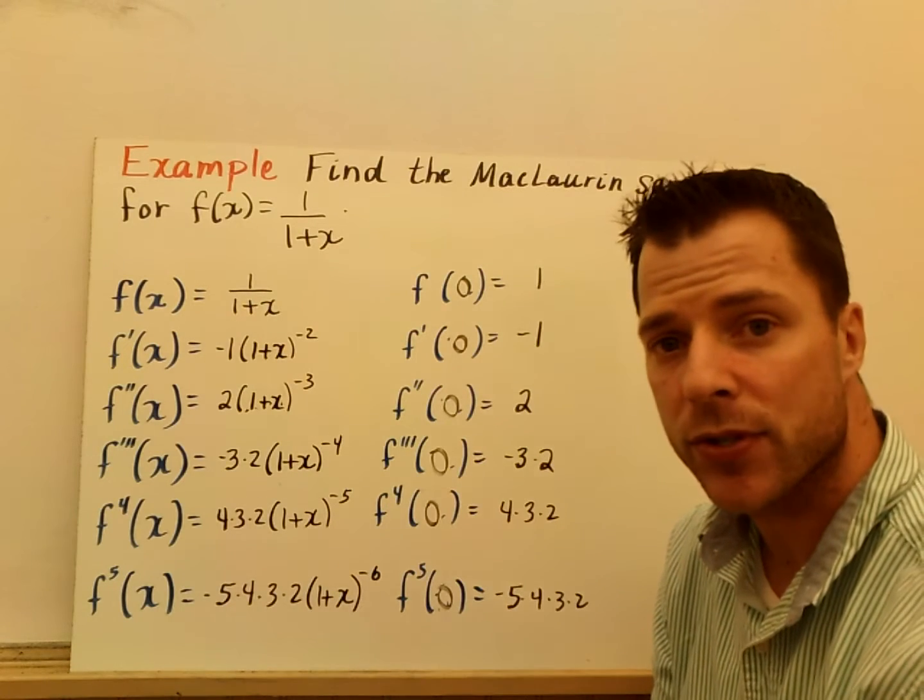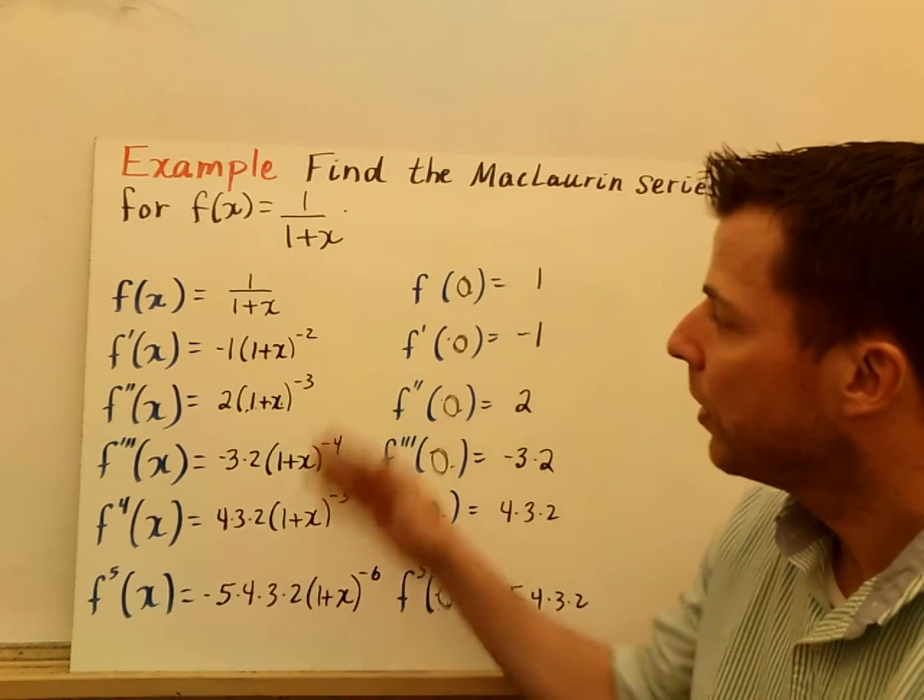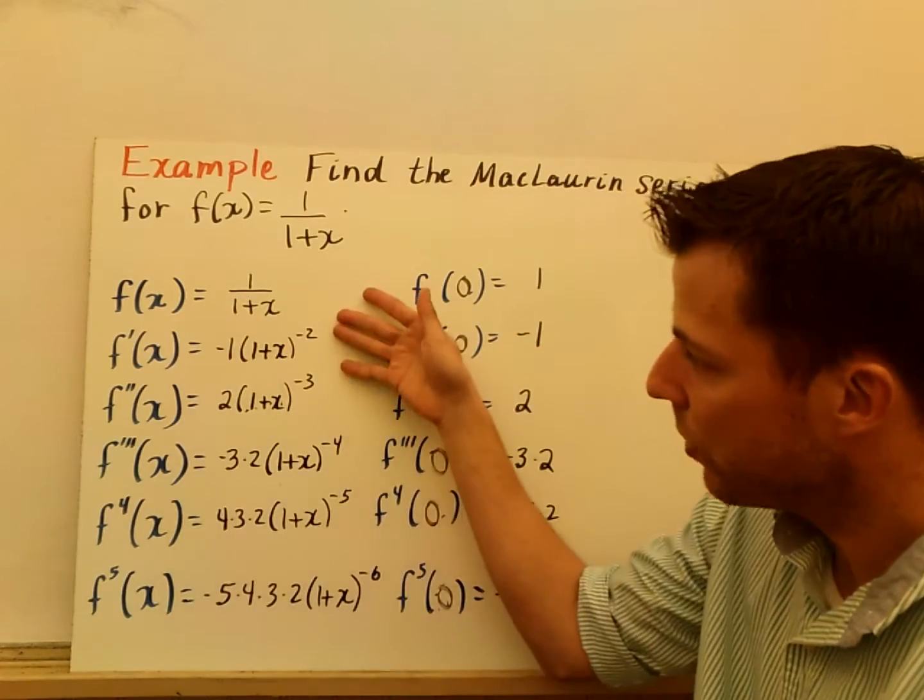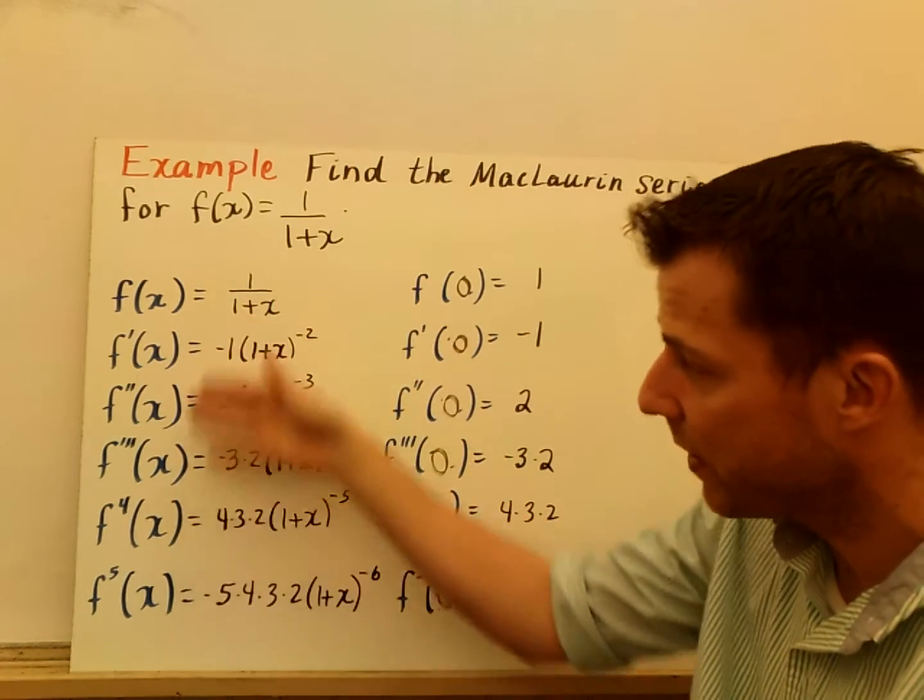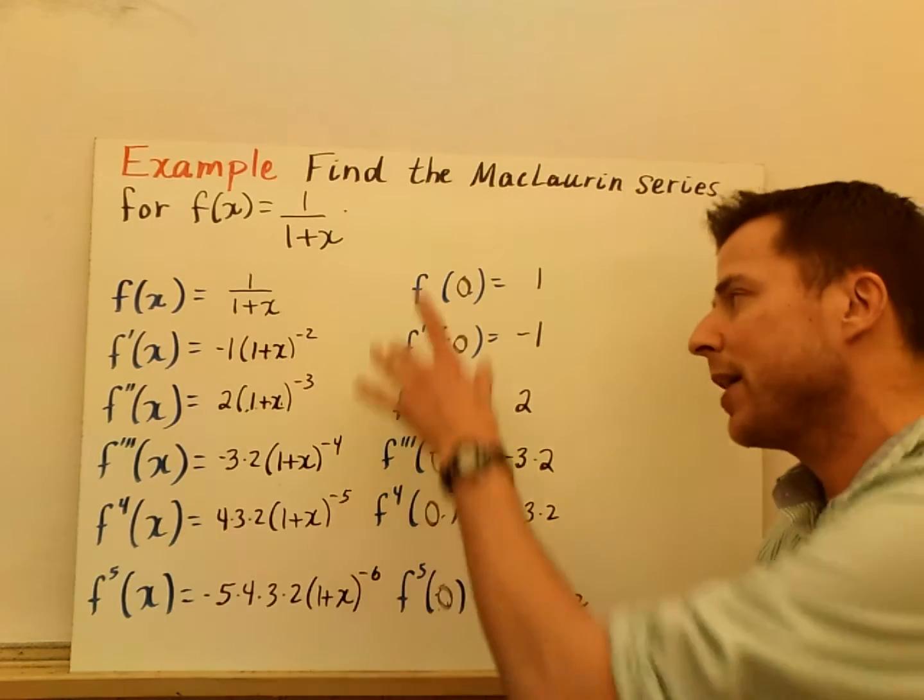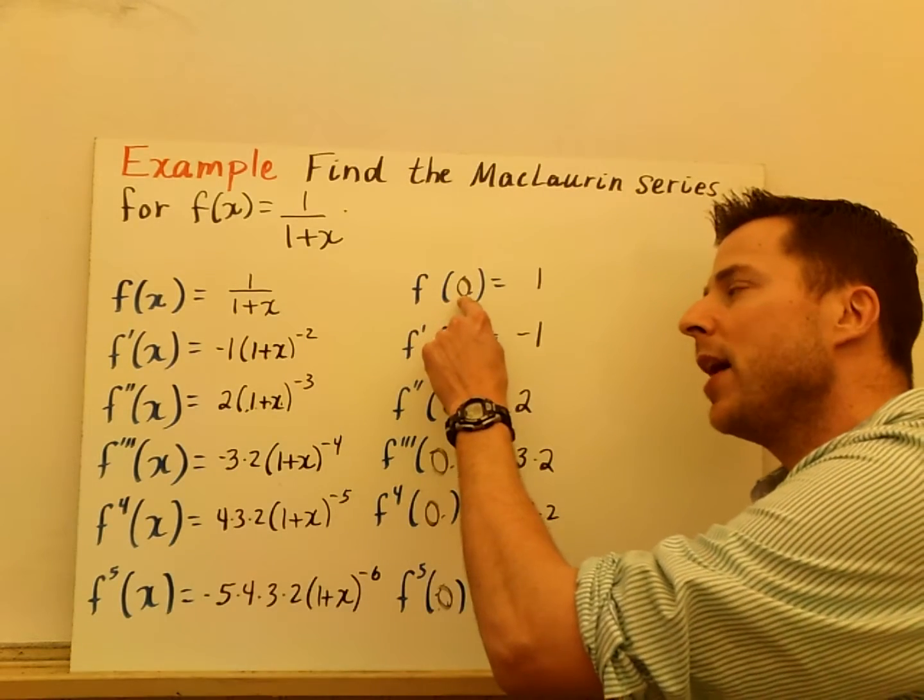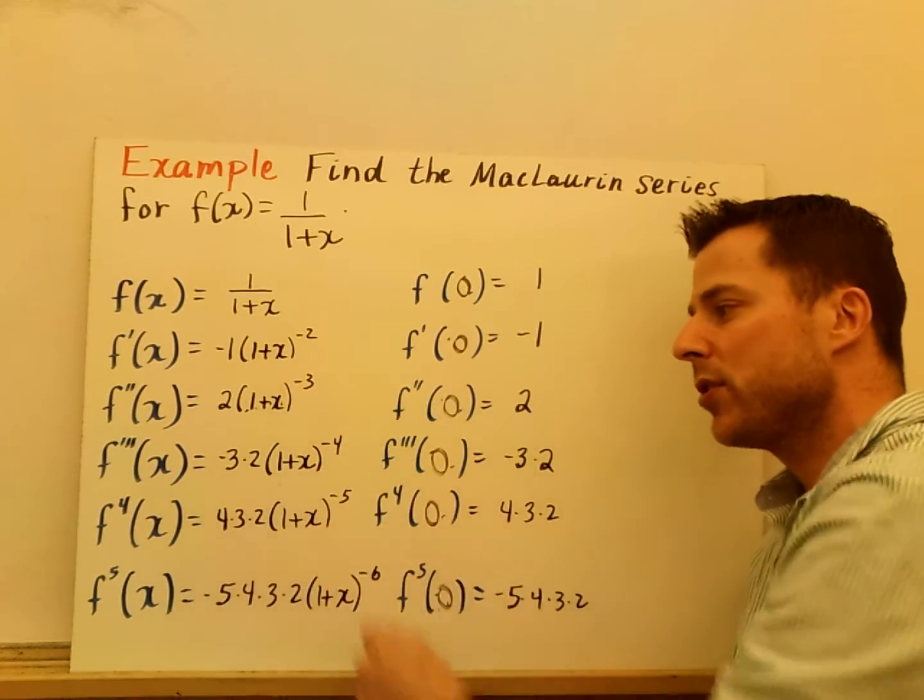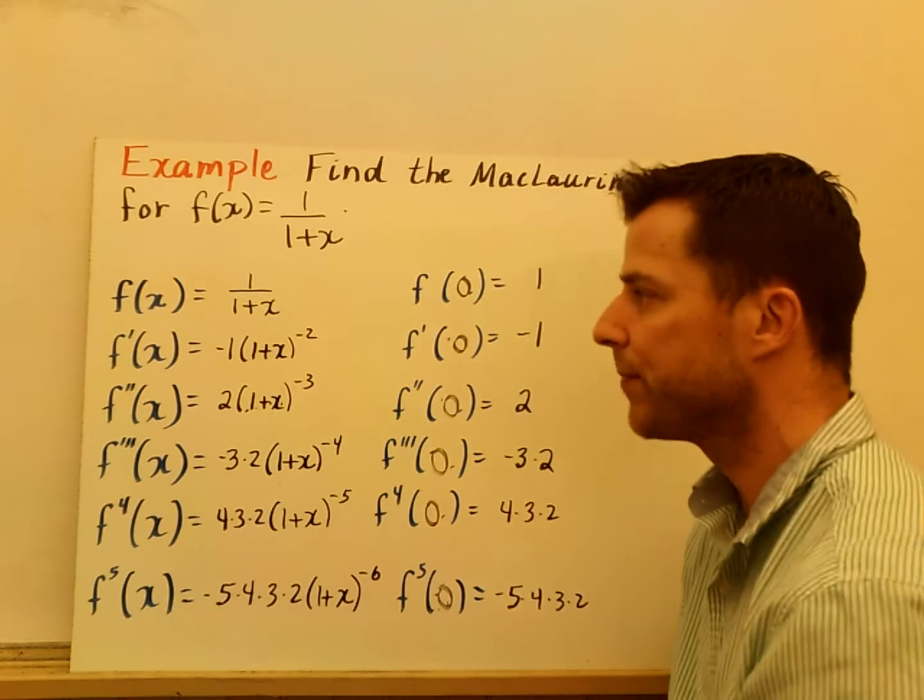Maclaurin series is a Taylor series with center at 0. So again, I've divided my board into 2. On the left side, I see my derivatives, starting with f of x. On the right side, I'm evaluating a is 0 into each of those derivatives and original function.